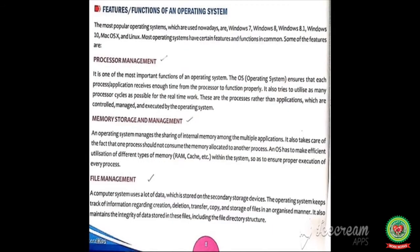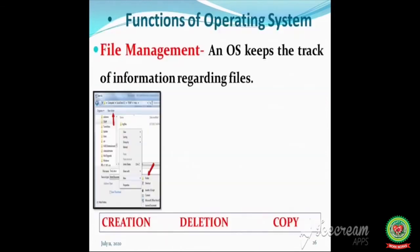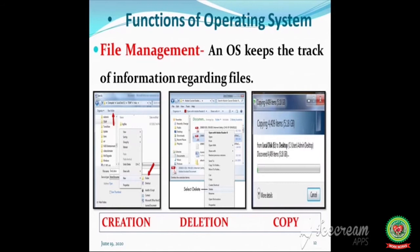The next function is file management. A computer system uses a lot of data which is stored on secondary storage devices. An operating system keeps track of information regarding files, such as creation of a file, deletion of a file, copying and transfer of a file, in an organized way.